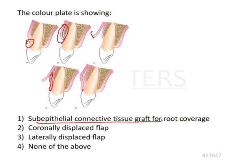In summary: a split-thickness flap is raised after placing an incision, the flap is reflected, the graft is placed, and it is sutured back into place.